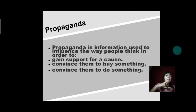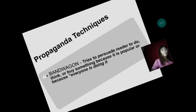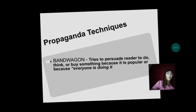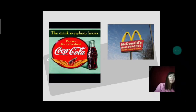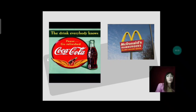What are the propaganda techniques? The first one is bandwagon. It tries to persuade readers to do, think, or buy something because it is popular or because everyone is doing it. An example of a bandwagon poster is Coca-Cola: 'The drink everybody knows.' Even if I didn't know Coca-Cola, saying 'the drink everybody knows' encourages me to buy it because it is popular.